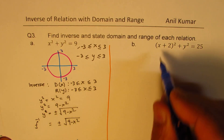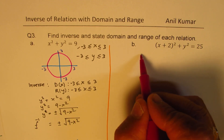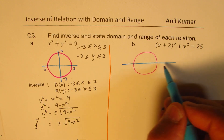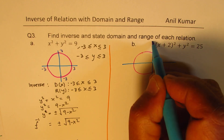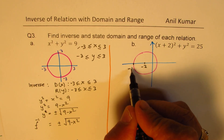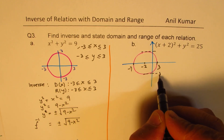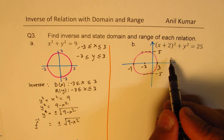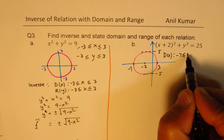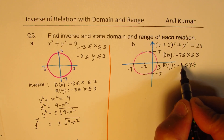Now here's the second part. This is a circle where the center has been shifted to minus 2, 0. So this circle has its center at minus 2 and radius 5. So this point on the left will be at minus 7, and on the right at 3. As far as the range is concerned, the maximum and minimum will be at plus and minus 5. So for the given relation, the domain is x between minus 7 and 3, and the range is y between plus and minus 5.